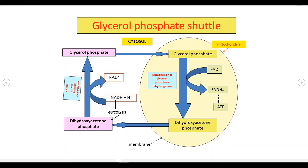Glycerol-3-phosphate then enters into mitochondria. After entering the mitochondria, glycerol-3-phosphate hands over its reducing power to FAD, then FAD gets converted into FADH2, and glycerol-3-phosphate gets converted back into dihydroxyacetone phosphate. Dihydroxyacetone phosphate वापस cytoplasm में आ जाता है और shuttle system को continue करता है। यहाँ NADH mitochondria के बाहर ही अपनी reducing power hand over कर देता है, इसलिए इस shuttle system में 2 ATP की production होती है।